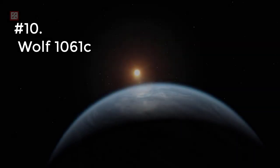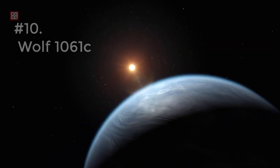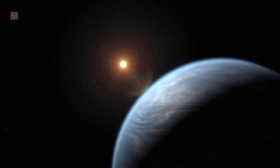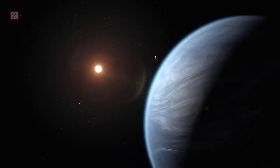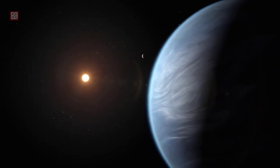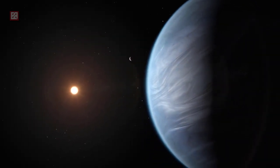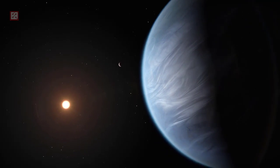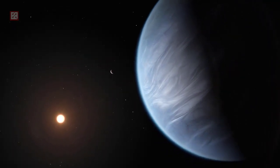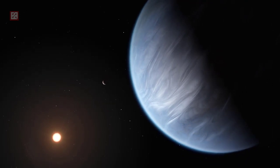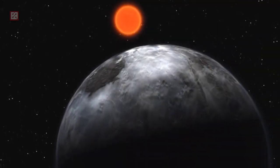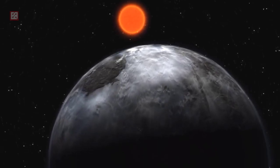Number 10: WL-1061C. Wolf 1061C or WL-1061C is an exoplanet orbiting within the habitable zone of the red dwarf star Wolf 1061 in the constellation Ophiuchus, about 13.8 light-years from Earth. This fifth-closest known and potentially habitable exoplanet has an orbital period of 17.9 Earth days and is classified as a super-Earth exoplanet as its estimated radius is greater than 1.5 of Earth's.